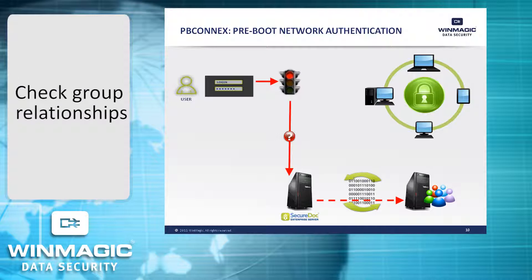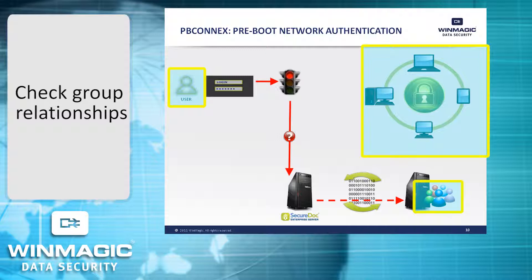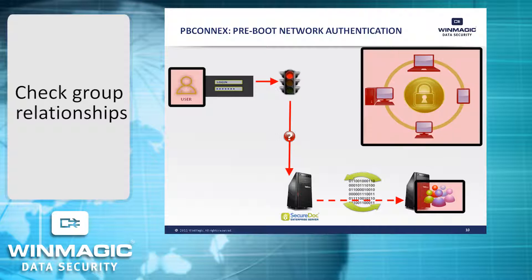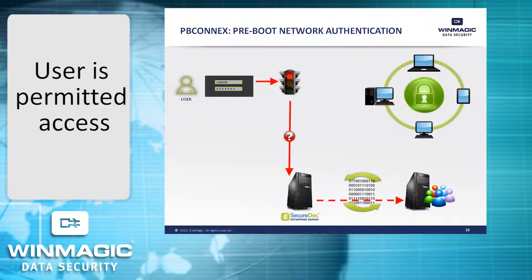In our device group and user group scenario, the PB-Connects server first determines whether this user belongs to any user groups that are permitted access to any device groups that contain this device. Second, it checks to see if this user belongs to any groups that are forbidden access to any device groups containing this device. In our example, this user is permitted access to this device.